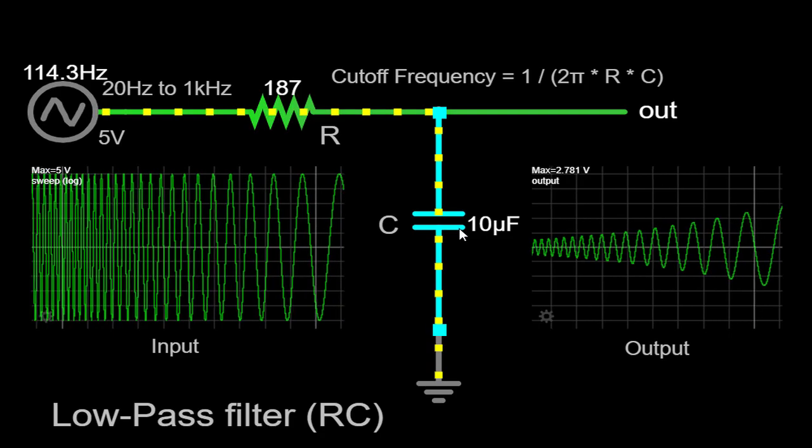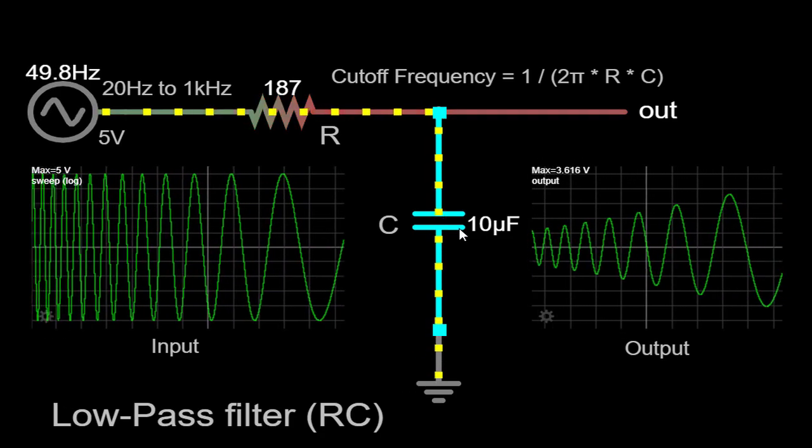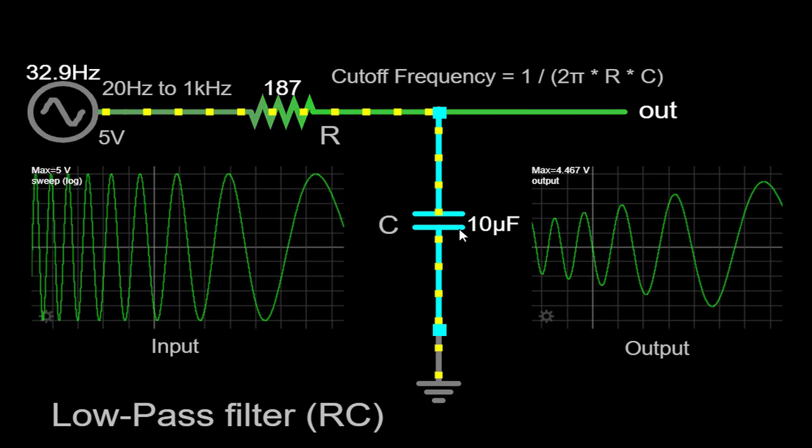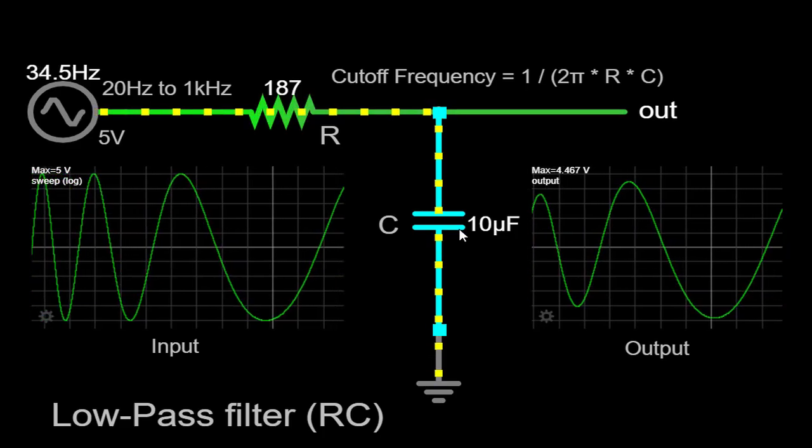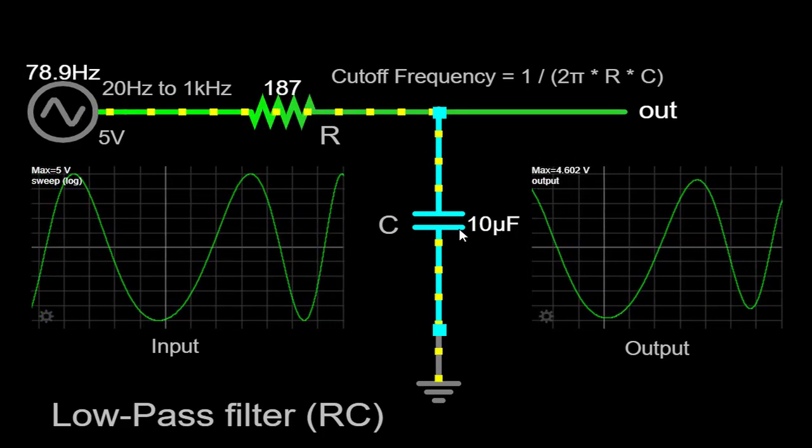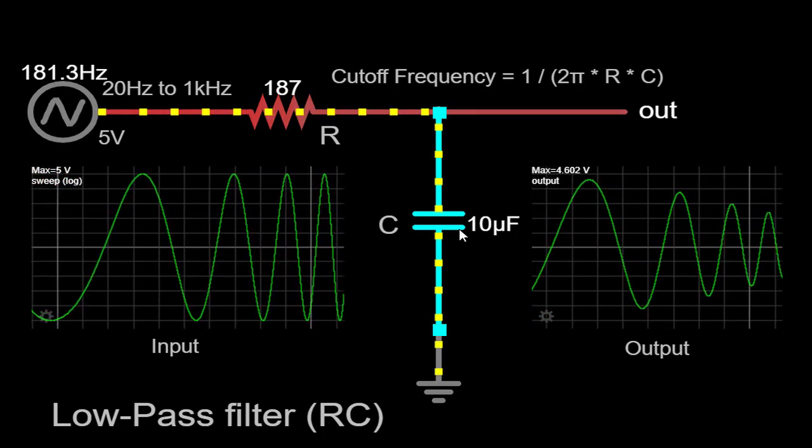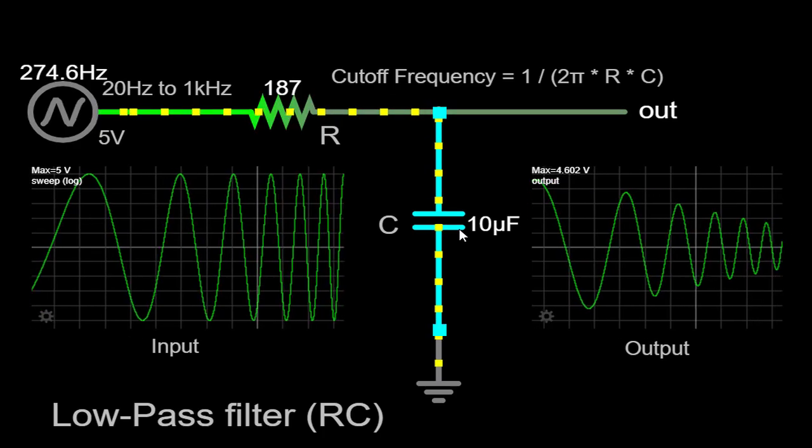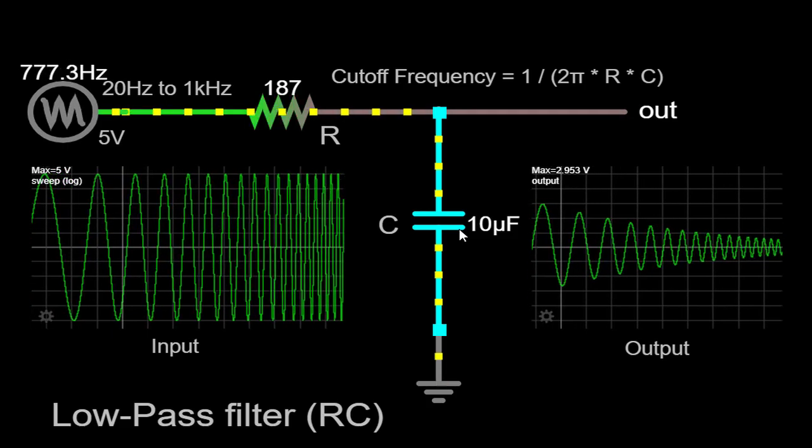This behavior can be further understood by considering the concept of reactance. Reactance is the opposition that a capacitor presents to the flow of AC current and is frequency dependent. At low frequencies, the reactance of the capacitor is relatively high, allowing more current to flow through it. However, as the frequency increases, the reactance decreases, impeding the flow of current and resulting in a voltage drop across the capacitor.